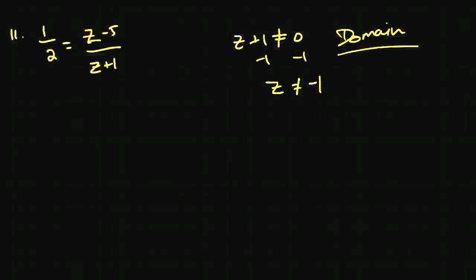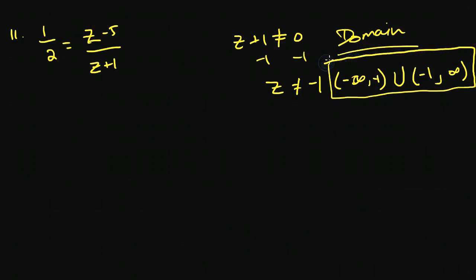would be that z could be from negative infinity to negative 1, but not include it. That's why we use that open parenthesis, the soft parenthesis. And then it's the union of that, from negative 1 to positive infinity. And get used to understanding this notation. You may not have to write it, but you do have to understand it so that you can use it later on.